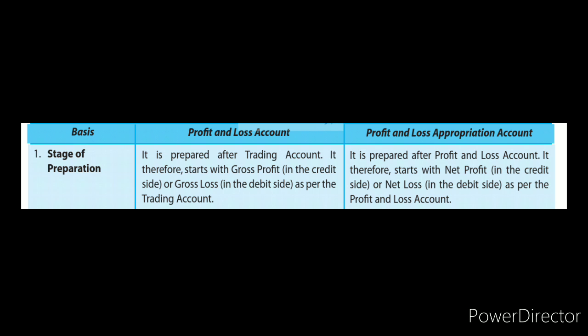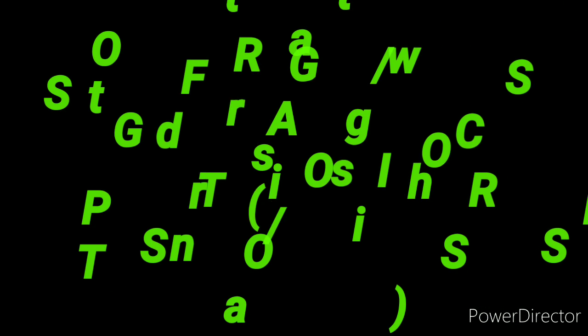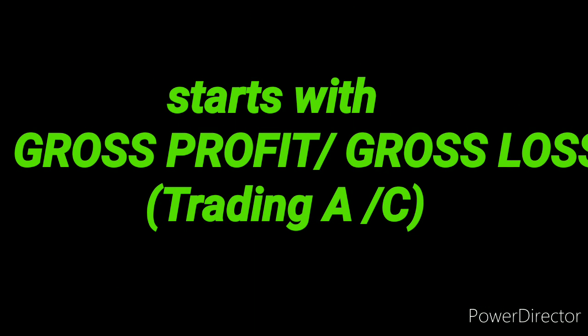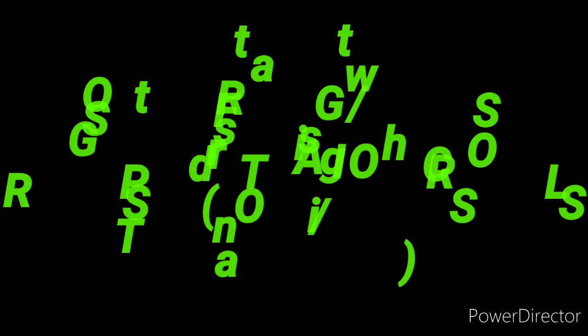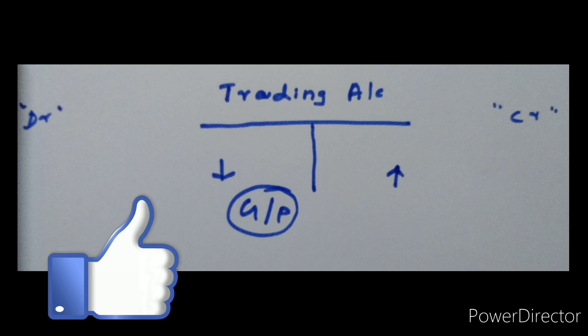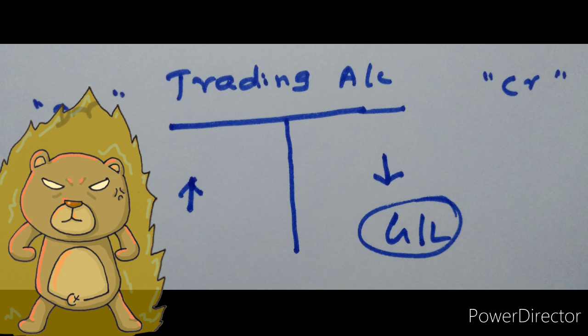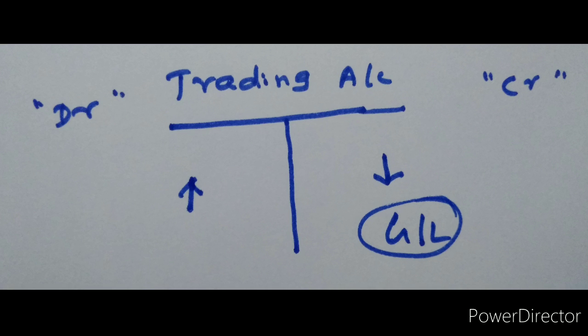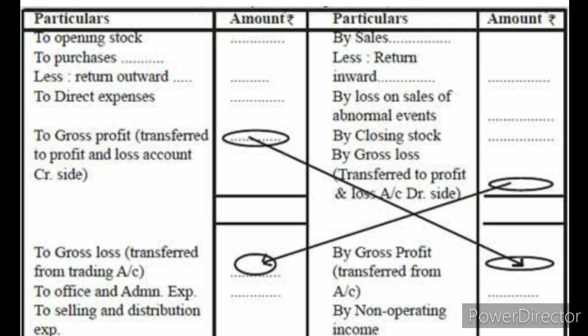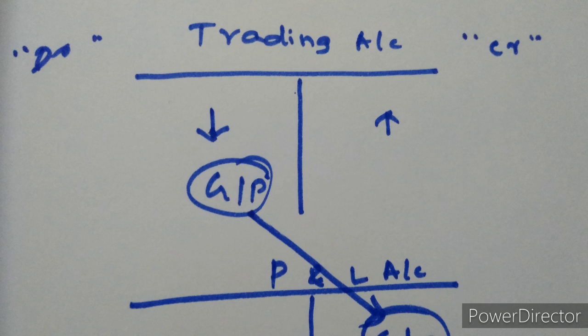First difference — stage of preparation. Profit and Loss Account is prepared after the Trading Account, and therefore starts with the gross profit as per the Trading Account. The Trading Account may give gross profit or gross loss. If credit side exceeds debit side, it is gross profit; if debit side exceeds credit side, it is gross loss. Whatever it is, gross profit or gross loss will be transferred to the Profit and Loss Account — gross profit to the credit side, gross loss to the debit side.